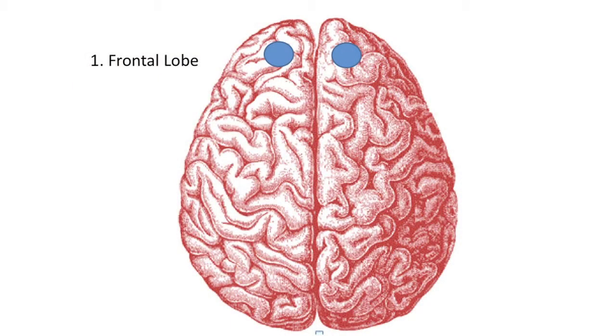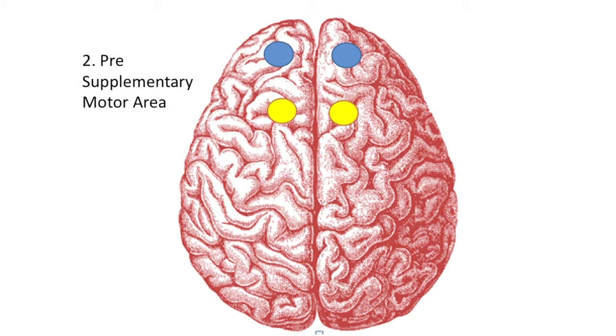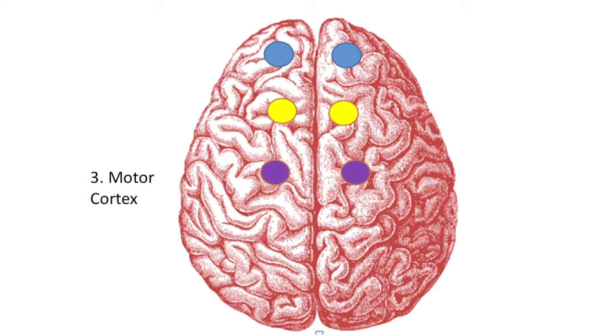What we're beginning to notice is a spreading network of activation through the brain, starting with the frontal lobes and the decision to move, spreading to the pre-supplementary motor area as we begin to prepare and coordinate the action, and then finally into the motor areas — that final bit of preparation before the signal is sent down the spine to the muscles of the neck and we begin to look left and right.